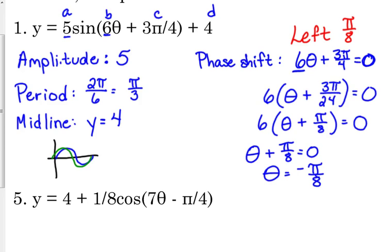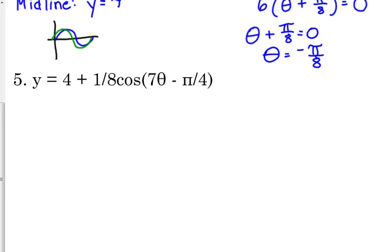Let's look at a cosine. Notice this one's a little out of order. It's a little out of order. The 4 is not at the end, but it is still your d. The 1/8 is the a. 7 is the b. And π over 4 is the c. So when we're trying to identify everything here, the amplitude is 1/8.